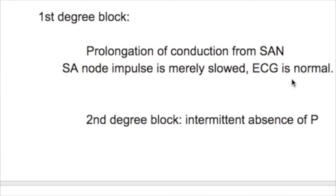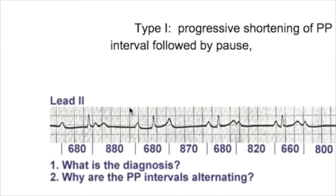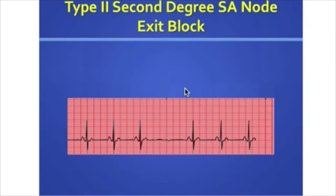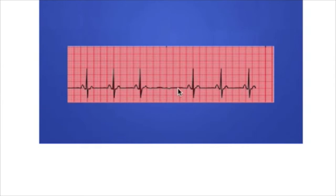The second degree SA node block has two types: type 1 and type 2. In type 1, there is progressive shortening of the PP interval followed by a pause. In type 2, there is no shortening of the PP interval but there is a sudden pause. And in type 3, there is no P wave withdrawal.